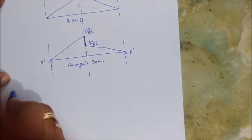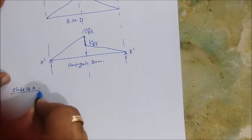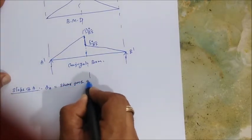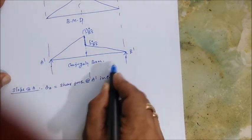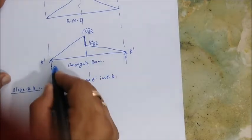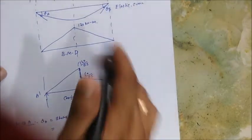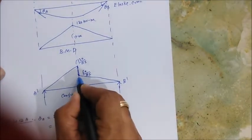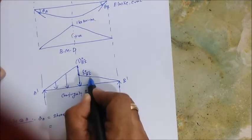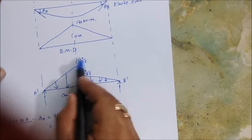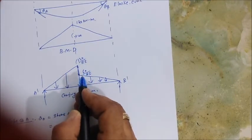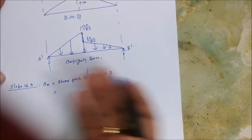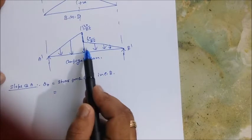Now let's find the slope at A. Theta A is equal to the shear force at A dash in the conjugate beam. In the bending moment diagram, it is sagging, so it gives a positive bending moment — the arrow will be downwards. In the conjugate beam, the M by EI diagram is treated as a loading, so we take it as a downward load and find the reactions.